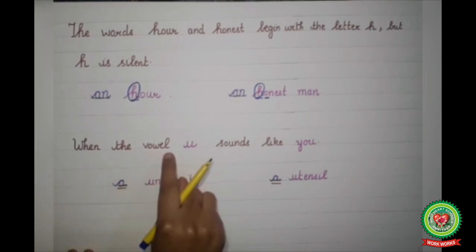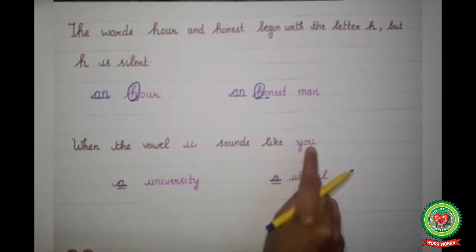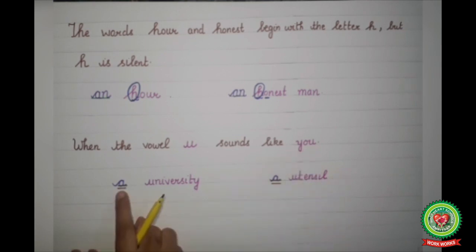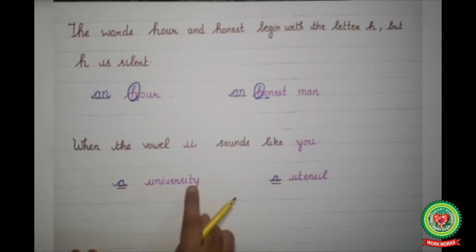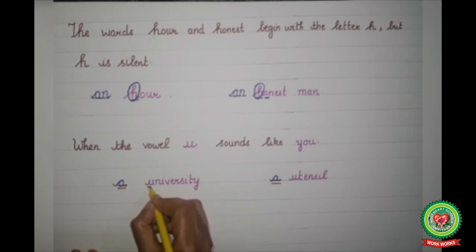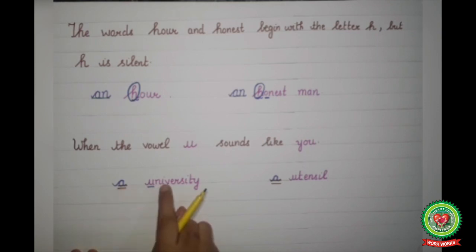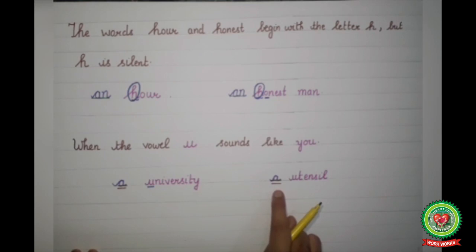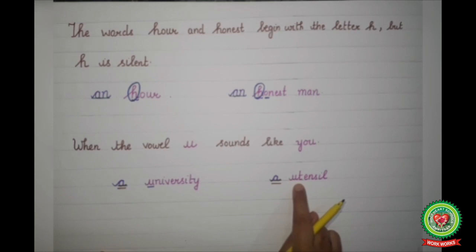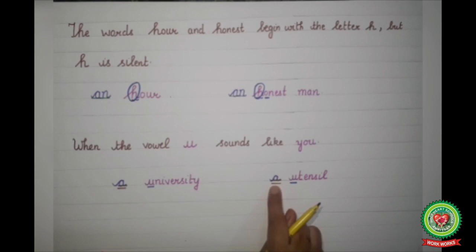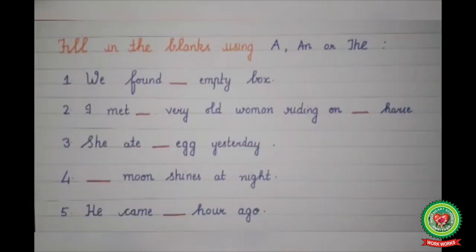One more thing: when the vowel U sounds like 'you', we will never use 'an' — we use 'a' instead. For example: 'a university' — here 'university' gives the sound of 'you', so we have written 'a university'. Next example: 'a utensil' — 'utensil' also gives the sound of 'you', so we have written 'a utensil'.